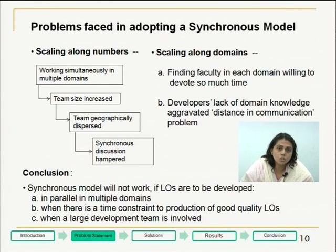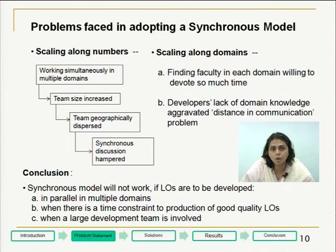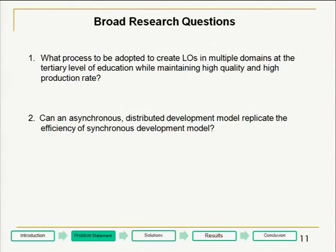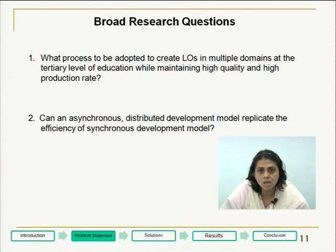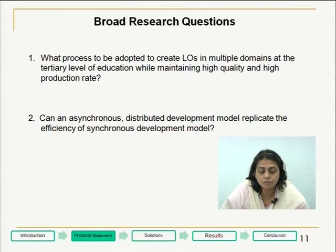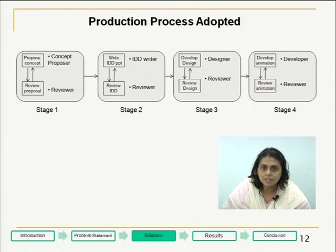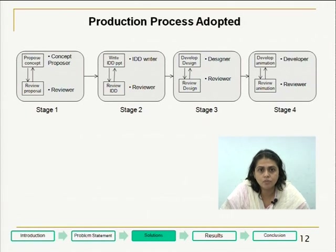The conclusion we arrived at was: the synchronous model will not work under the following conditions — A, if we are trying to produce LOs in parallel in multiple domains; B, when there is a time limit to the production of learning objects; and C, when a large development team is involved. The broad research question facing us was: what model do we adopt to meet our objectives? An offshoot was: can an asynchronous distributed development model replicate the efficiency of a synchronous model?